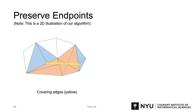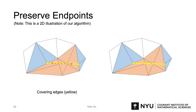Let's go back to our 2D example. After getting the covering edges, we want to preserve the endpoints of the input segment. Usually, the endpoints would be naturally preserved after the neighbors of the segment are inserted, but it's not always the case. For example, the segment may have no neighbor. In this case, we need to explicitly preserve the endpoints — that is, compute the intersection of the endpoints and the covering edges, marked in red. Then we can use the pre-mentioned table-based method to re-triangulate this region. Now we've finished inserting the segment.